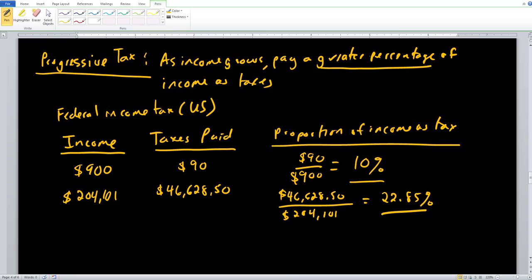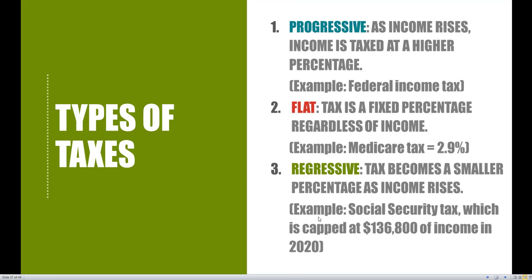The second type of tax is a flat tax — a fixed percentage of income regardless of your income level. An example is the Medicare tax of 2.9%. It doesn't matter what your income is; the government always takes 2.9%. You make $100 — 2.9% is taken. You make $100 million — 2.9% is taken. Internationally, Russia also has a flat tax of roughly 11% to 13%, so no matter how many rubles you earn, it's taxed at that flat rate.